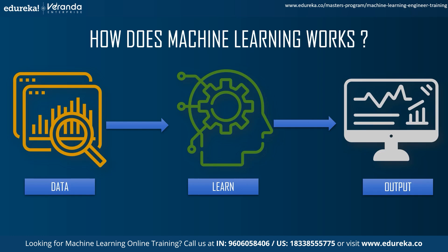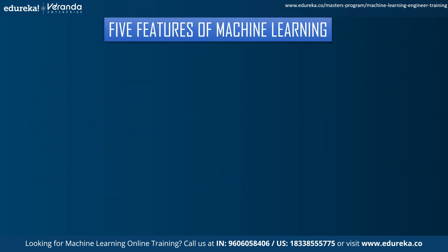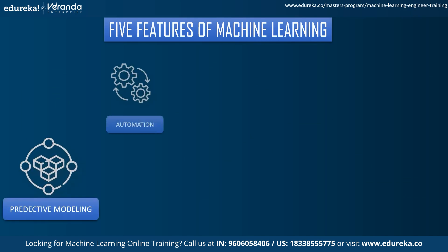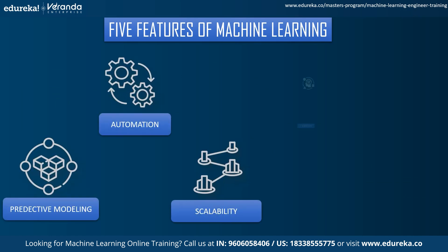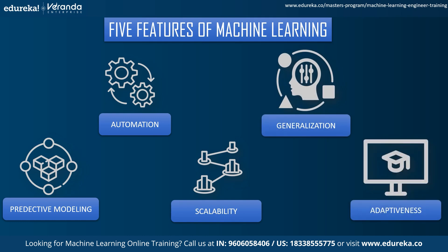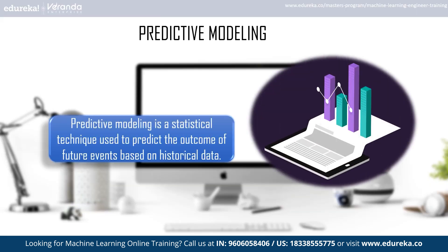Now you understand what machine learning is. Let's deep dive into the features. There are five features of machine learning: predictive modeling, automation, scalability, generalization, and adaptiveness. Let's go through them one by one. In predictive modeling, the system uses mathematical functions and statistical techniques on historical data to give you future predictions.